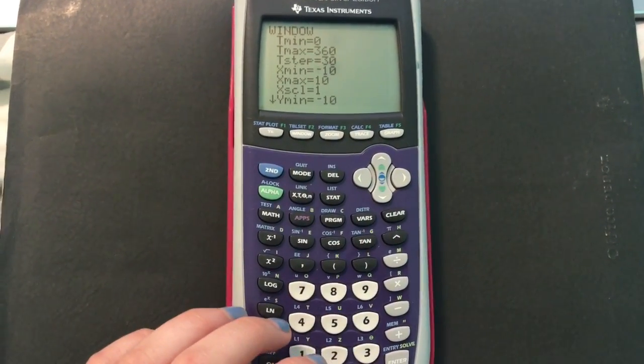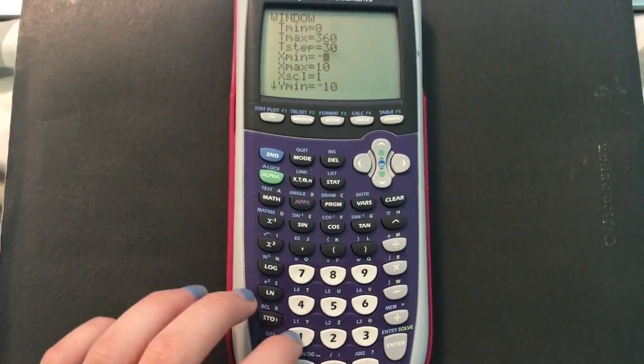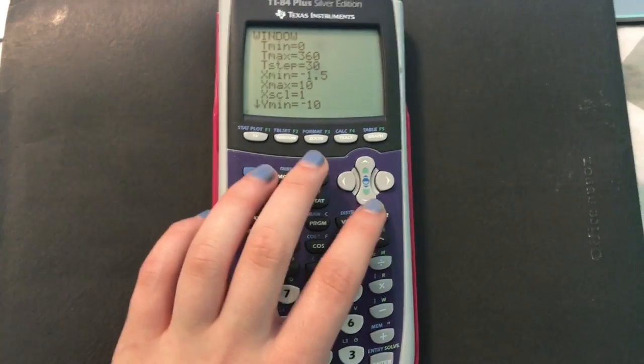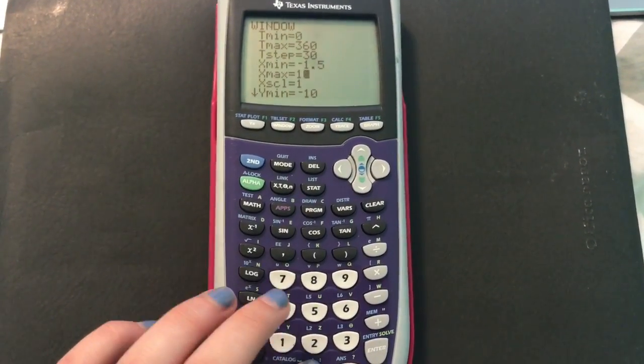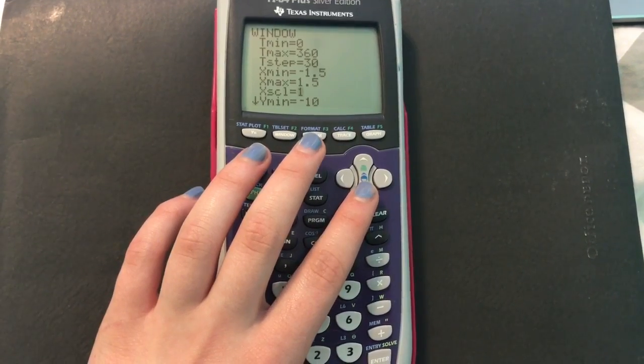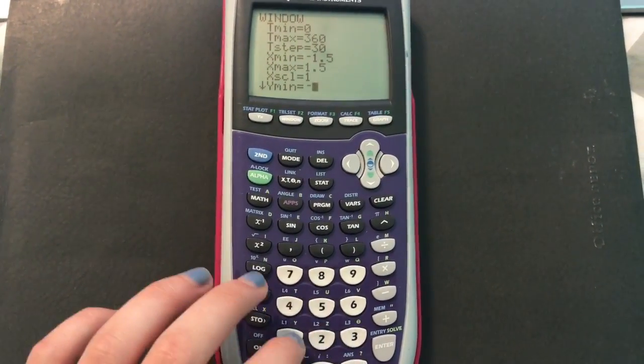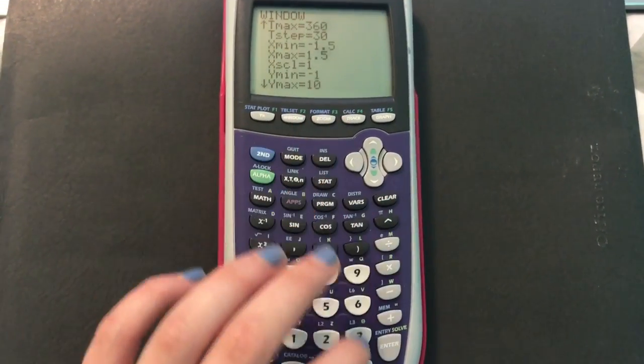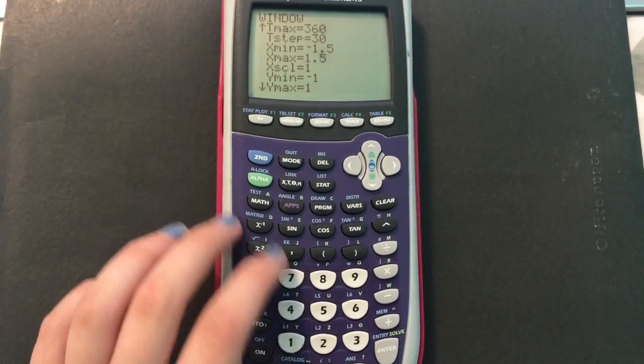So then the x minimum is going to be negative 1.5. The maximum would be 1.5. And then the x scale is going to be 1. And then the y minimum, negative 1. Y maximum should be 1.